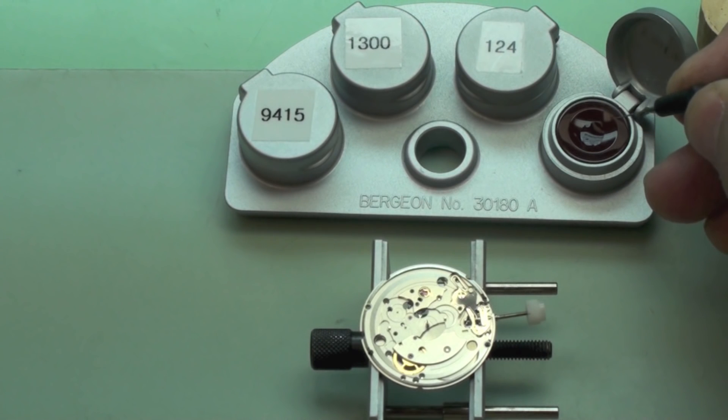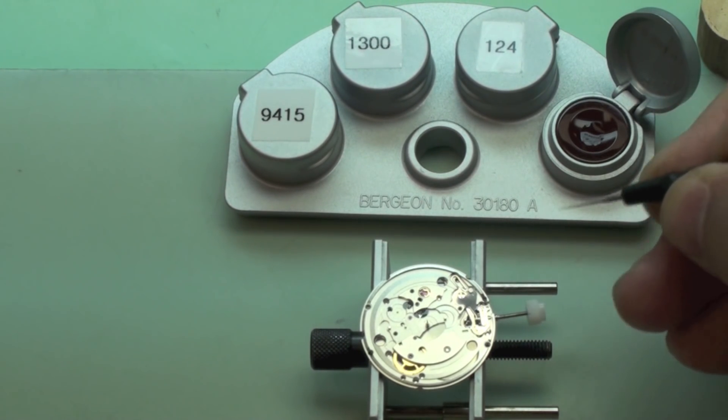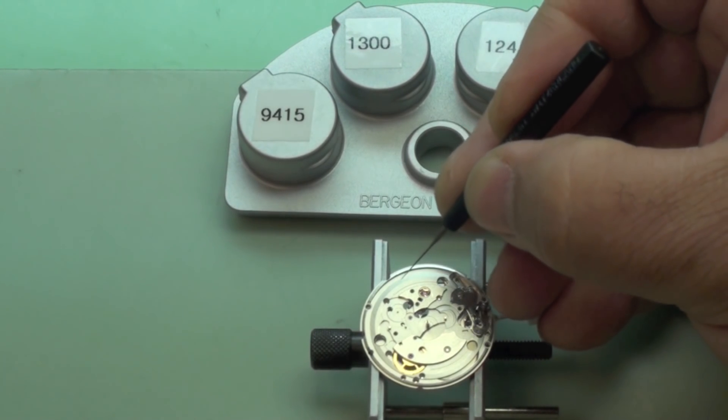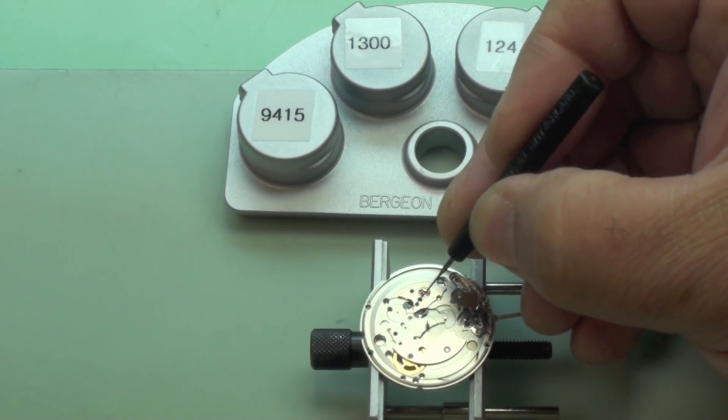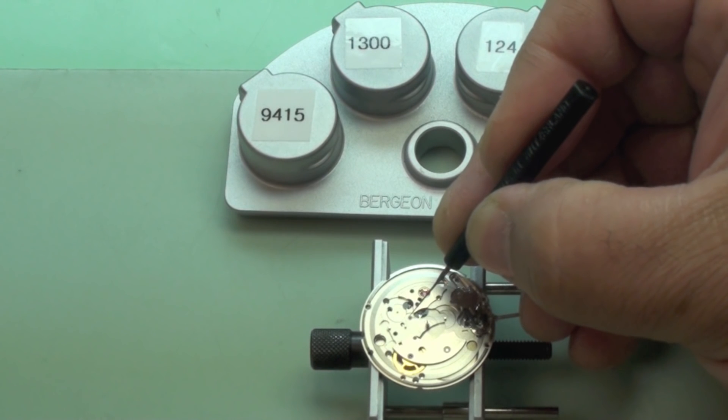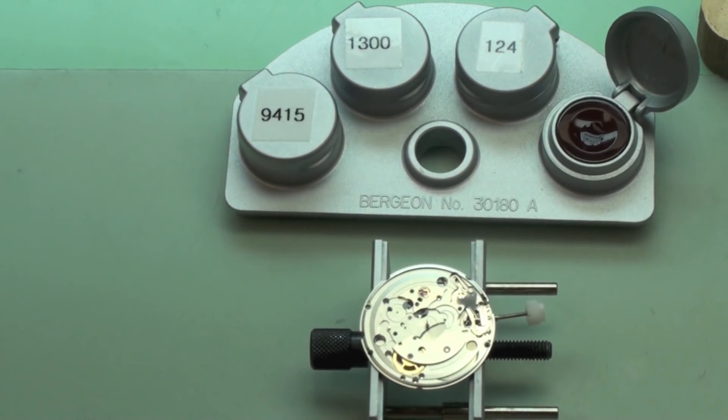Lubricating a movement properly is one of the most important aspects of professional watch service. The shape and finish of your oiler and the cleanliness of your lubricants are just as important as the precision with which oil is picked up and placed in the movement. Let's take a look at the finer points.